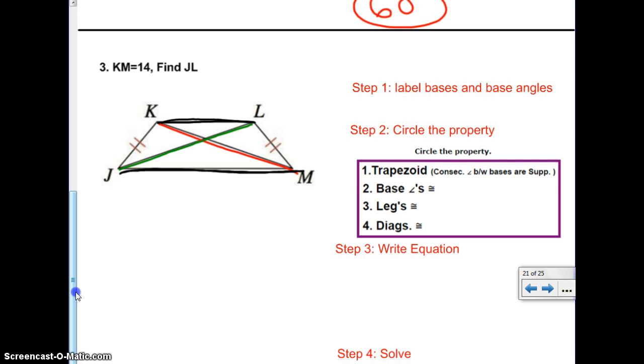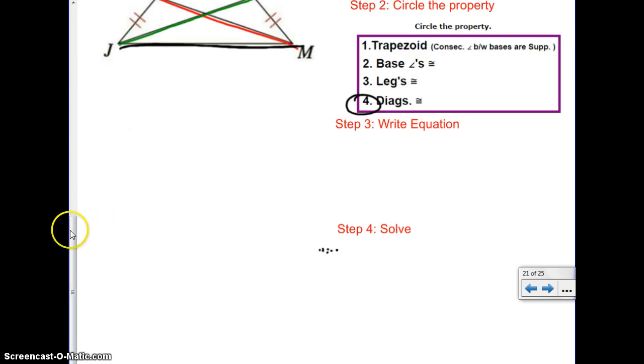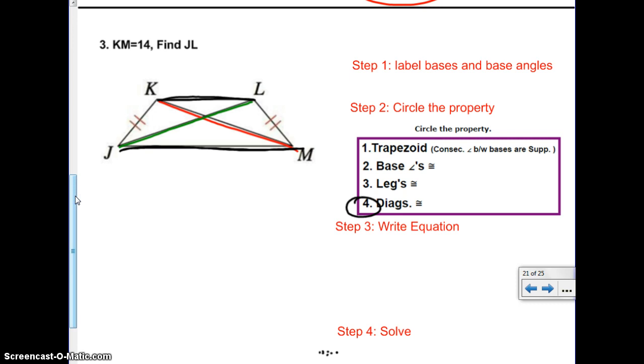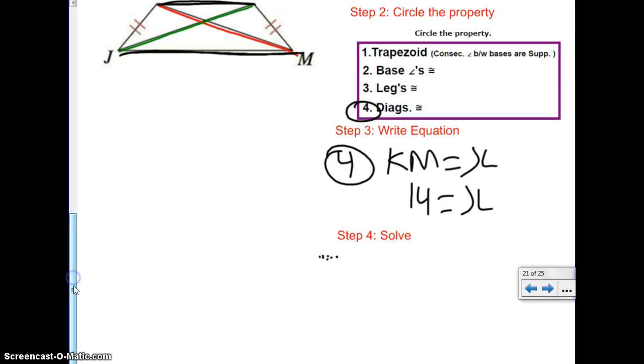And which property is going to help us? Well, which property has to do with diagonals? Number four. Number four says your diagonals are congruent. So in this case, they told us that KM is 14. So based on property four, we know that diagonal KM is equal to the diagonal JL. Well, if KM is 14, what's JL? It's 14. So our final answer is JL equals 14.